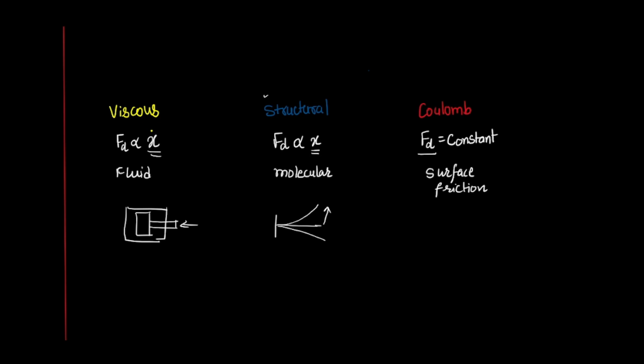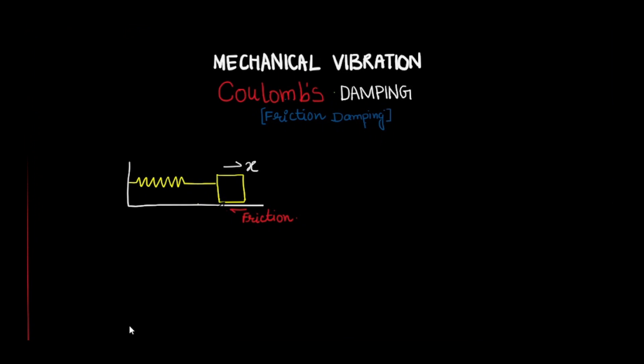Now let's do a mathematical modeling of Coulomb damping. Here I am showing a spring-mass system where the mass m is connected to a spring, and the system vibrates about a mean position. Because of the contact of the body with the ground, there is dry friction present between the two surfaces, which dissipates the energy of the system.